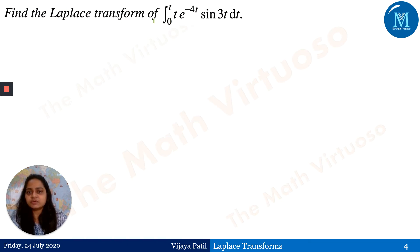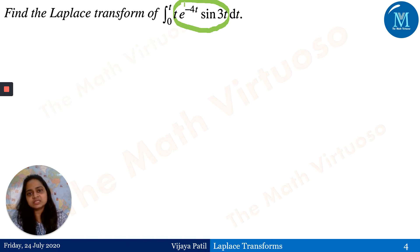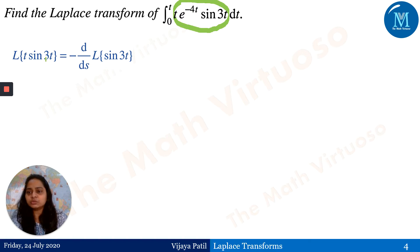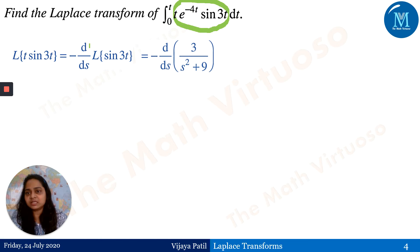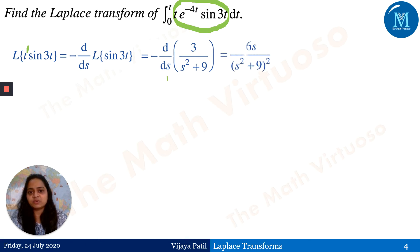Now the Laplace transform of the integral from 0 to t of t·e^(-4t)·sin(3t)dt. My task is to find the Laplace transform of this entire integrand and then multiply by 1/s. So my target is to get the Laplace transform of t·e^(-4t)·sin(3t). The Laplace transform of sin(3t) is 3/(s²+9), and the effect of multiplication by t gives: minus d/ds of 3/(s²+9), which equals 6s/(s²+9)².